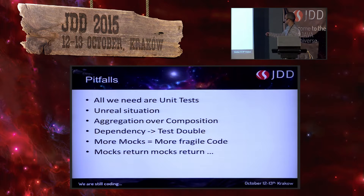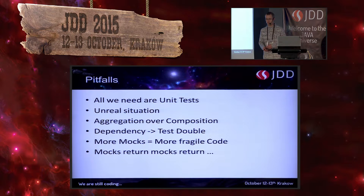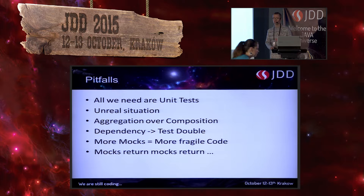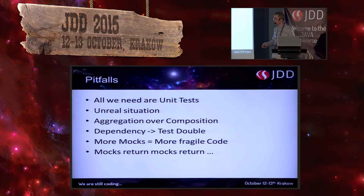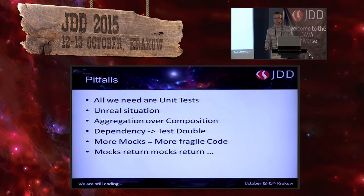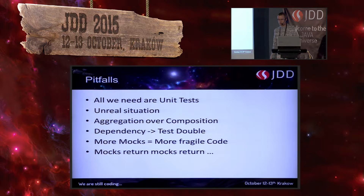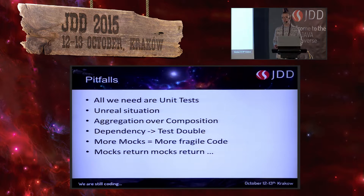Another pitfall is aggregation over composition. Not composition in the manner of using interfaces, but composition like a class built from a few parts. Even if those parts are a strict part of the whole, we are using injections. Why? Because it's easier to mock injections. We are no longer creating objects inside the object, even if this object is the structure responsible for them. We create factories, builders, we use dependency injection. And with frameworks like Spring, we even abuse it — we always pass everything through constructors or setters.